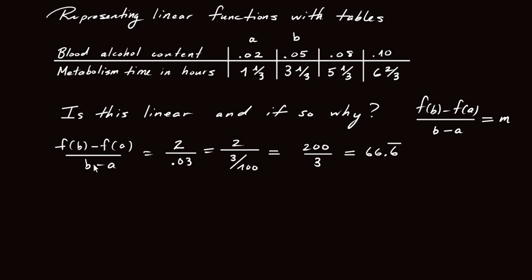So back to our problem, we want to figure out whether for other choices of a and b, we still get 66.66 repeating. And we need to check other values of a and b. So we choose a now to be 0.05 and b equal to 0.08.